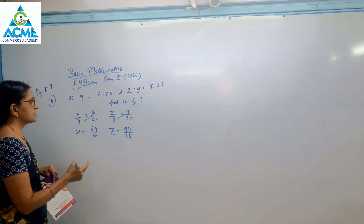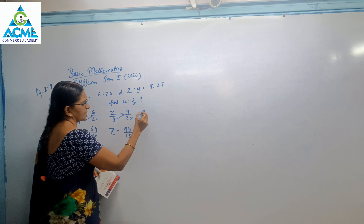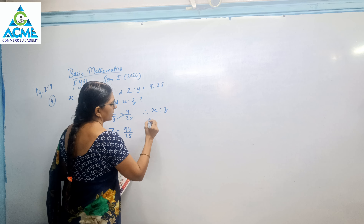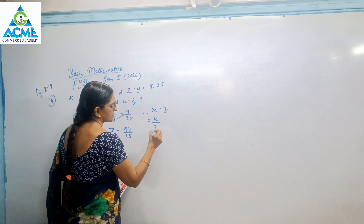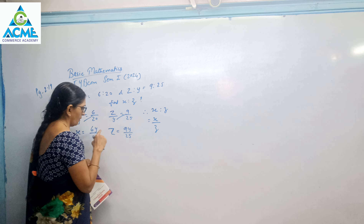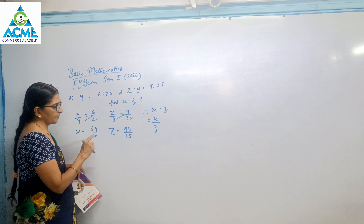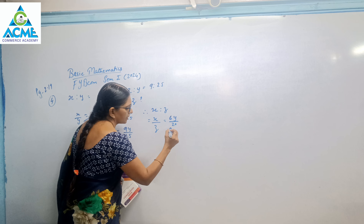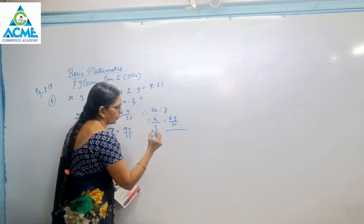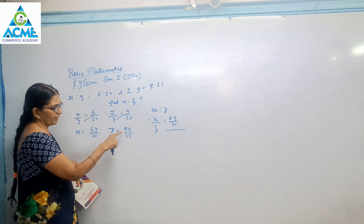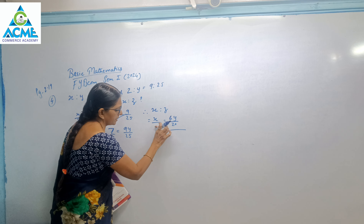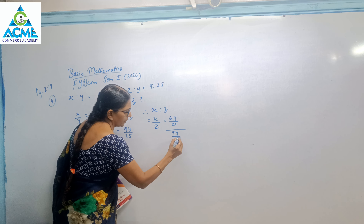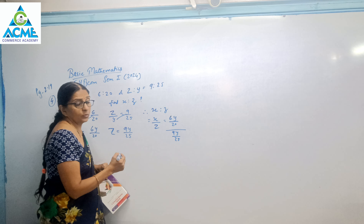Now what they are asking? Find x is to z. Therefore x is to z means x upon z. The value of x is 6y upon 20, and the value of z is 9y upon 25. Now see the rule for dividing fractions.